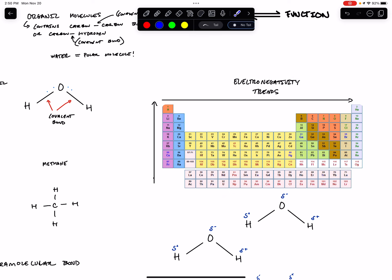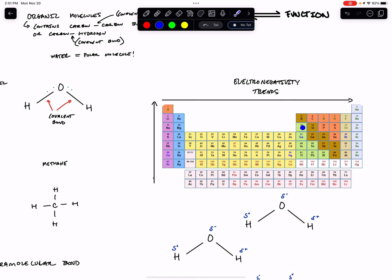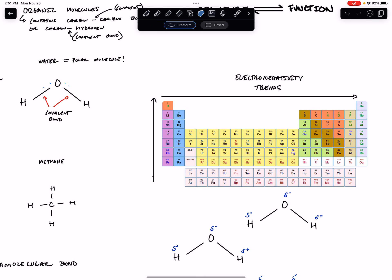Fluorine is the most electronegative element. As you move across the periodic table, the nucleus is getting bigger and bigger, but we have not yet created a new orbital or shell for the electrons. So the nucleus is able to pull more and more strongly on the electrons orbiting it. As we move down the periodic table, we enter a new electron orbital, so even though electronegativity increases moving across, the electrons are further from the nucleus — further in chlorine than in fluorine. What matters in determining whether a bond will be polar is the electronegativity difference between the two elements.